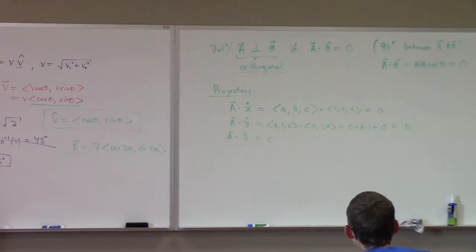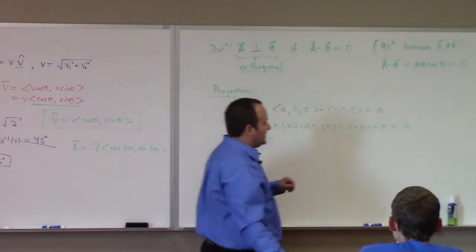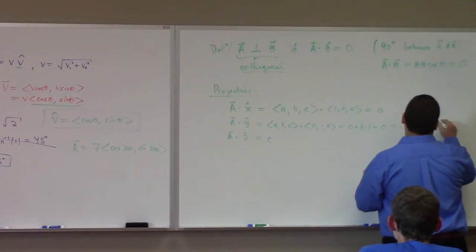We're just doing the dot product. But, hey, those are the components. So, it looks like we found a new way to understand what the components, the scalar components of a vector mean.